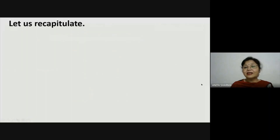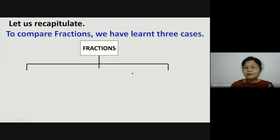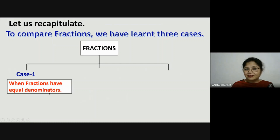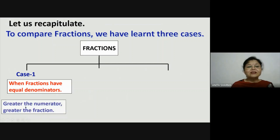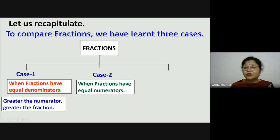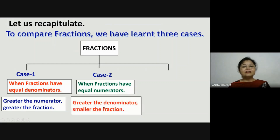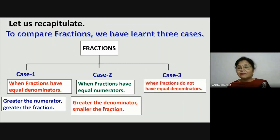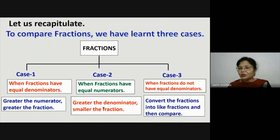Let us recapitulate. To compare fractions we have learnt 3 cases. Case 1: when fractions have equal denominators — greater the numerator, greater the fraction. Case 2: when fractions have equal numerators — greater the denominator, smaller the fraction, because the considered parts are smaller. Case 3: when fractions do not have equal denominators — they are unlike — so convert the fractions into like fractions and then compare.